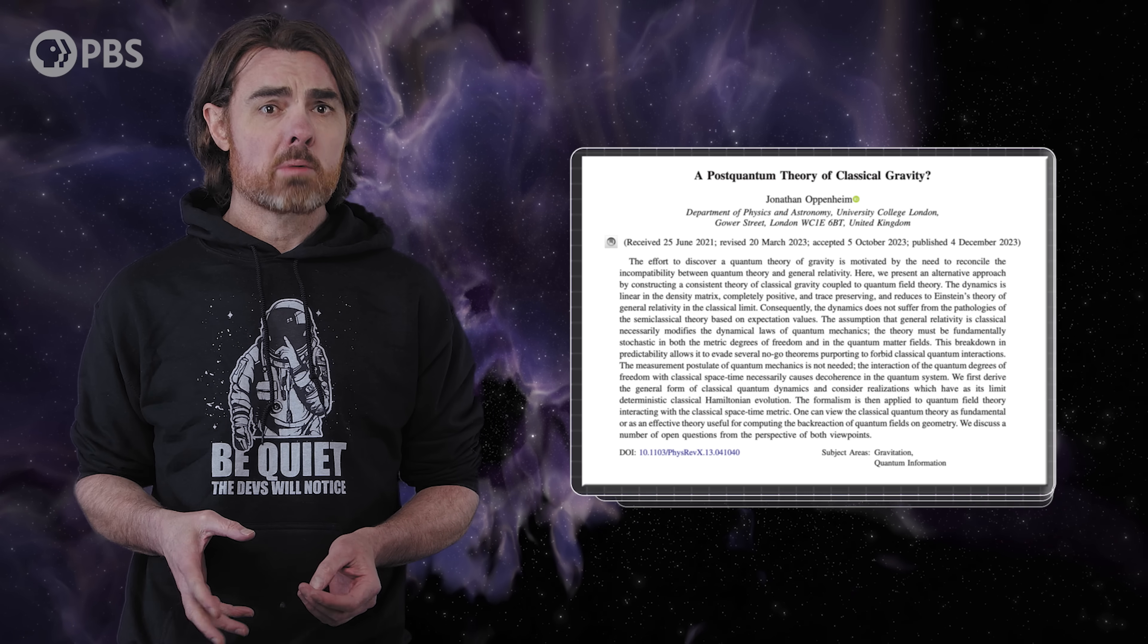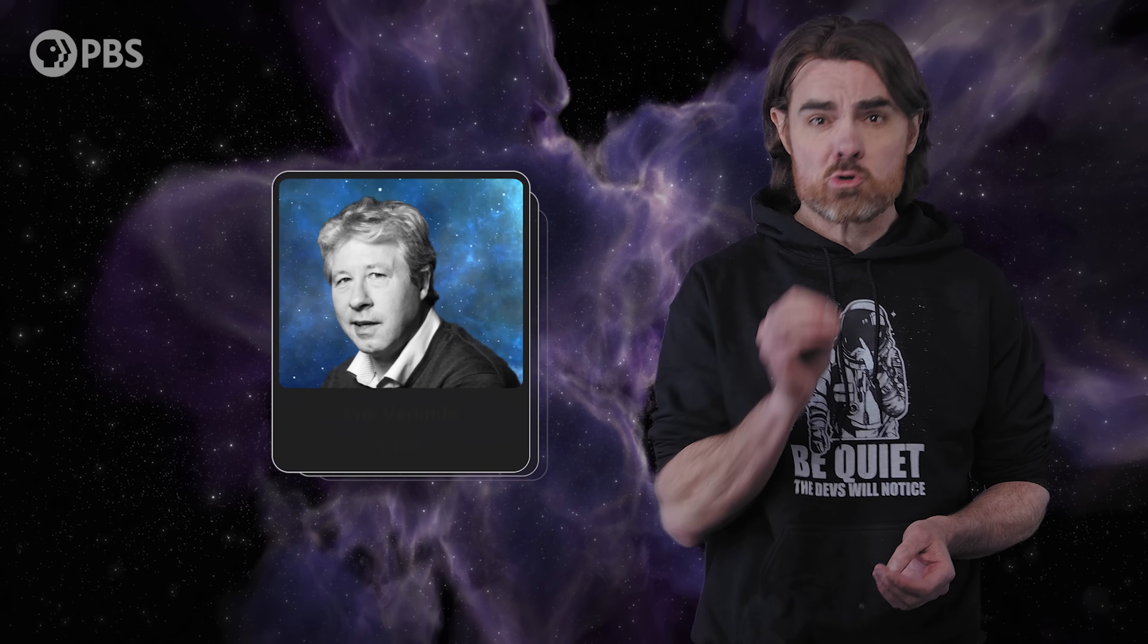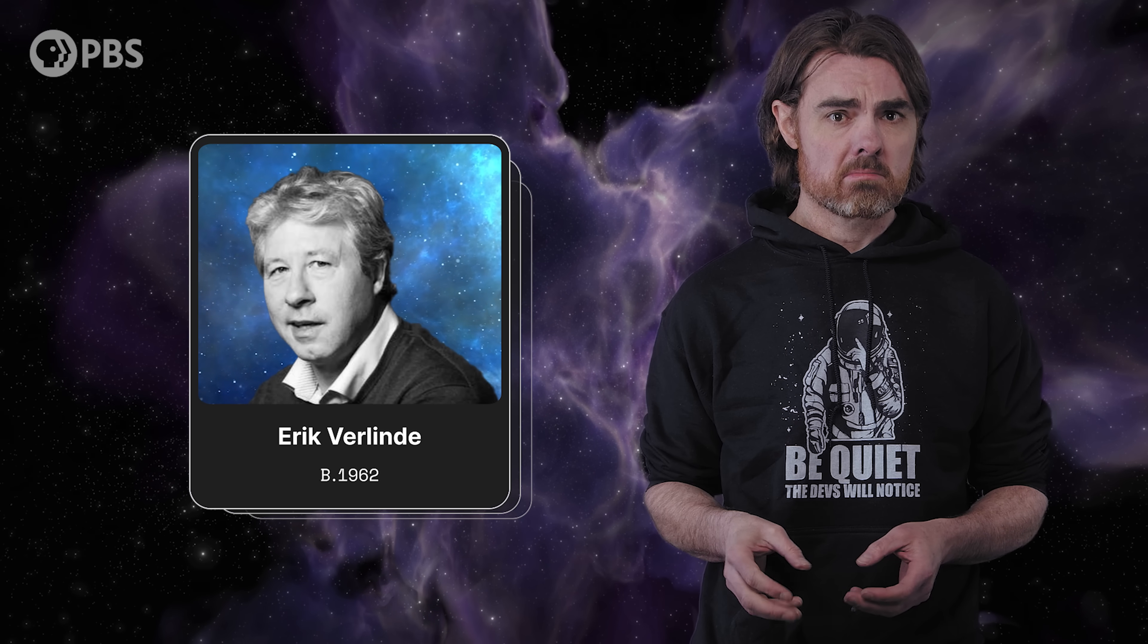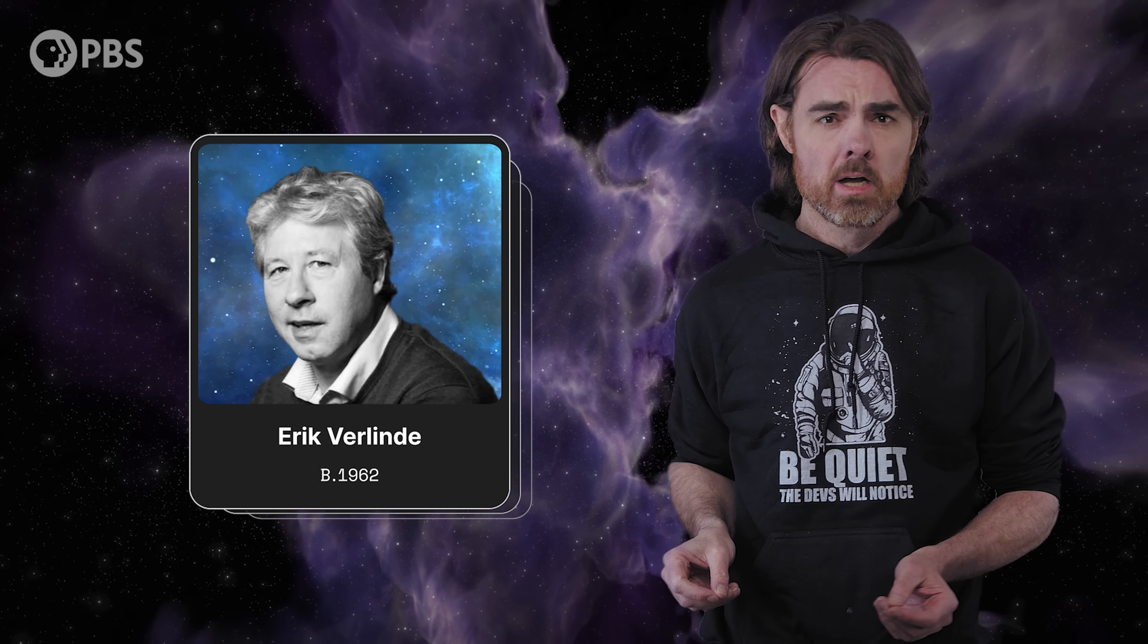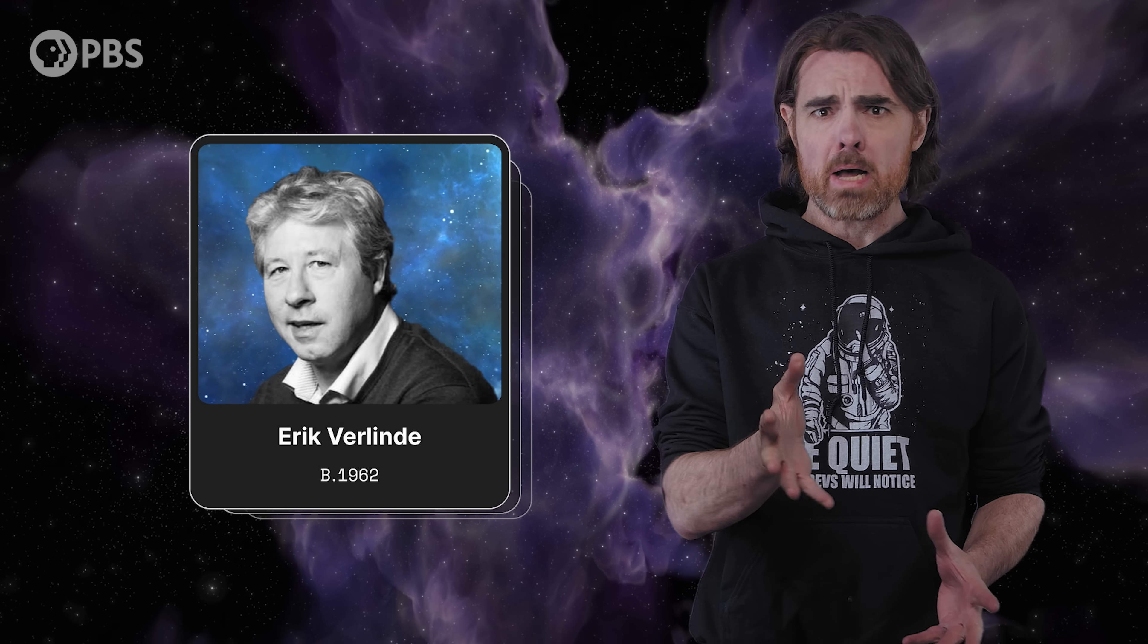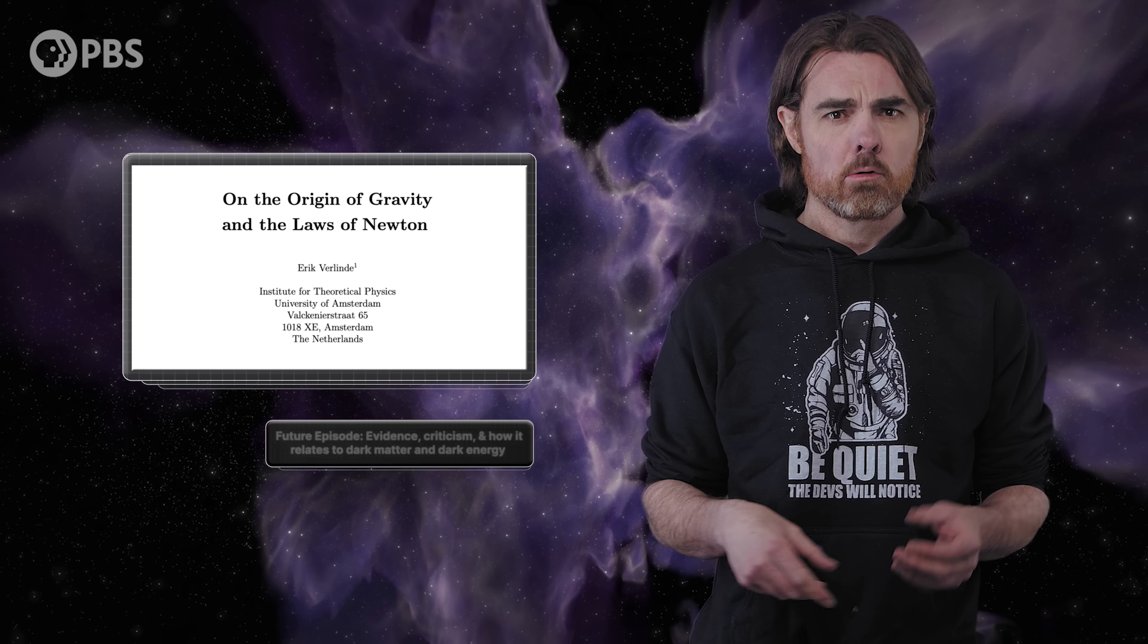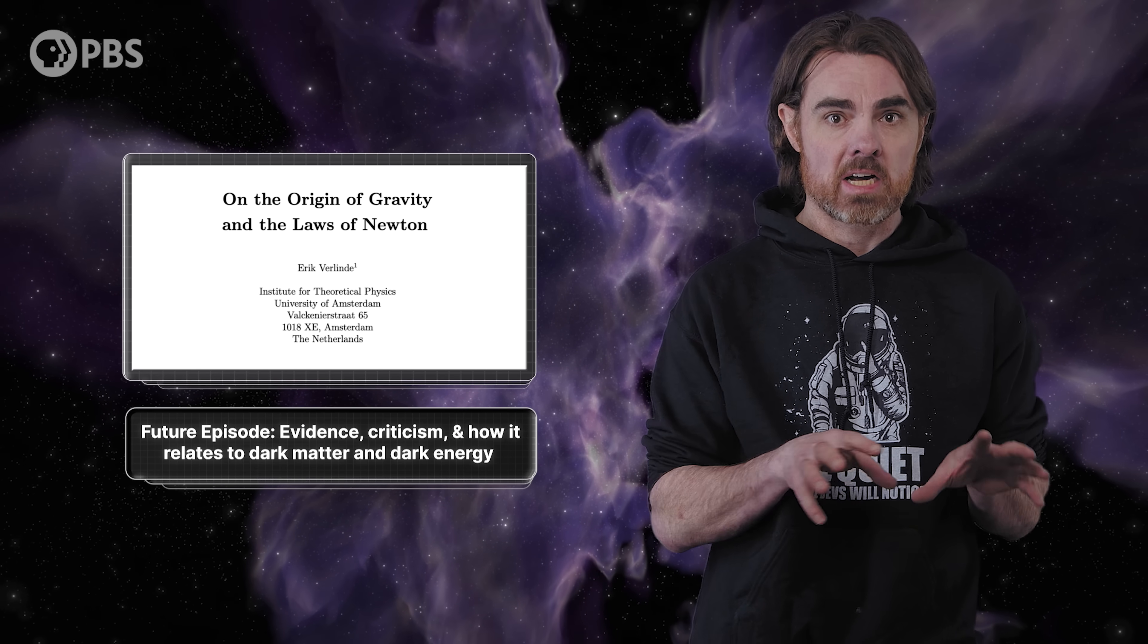There are a number of proposals along this line, including the buzzy recent work by Jonathan Oppenheim, but we're going to have to come back to that. Because there's an idea that you've been asking us to cover for years now. That's the emergent entropic gravity of Dutch physicist Erik Verlinde, who tells us that it's not some fundamental force or the curvature of spacetime that's keeping you in your chair right now, but rather the rise of entropy on the boundary of the universe. Today, we're going to lay out the basics of Verlinde's entropic gravity as it was published back in 2010. We'll follow up with an episode on the evidence and the criticism, and what the idea has to say about dark matter and dark energy.